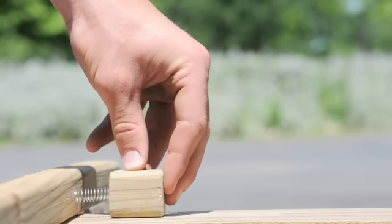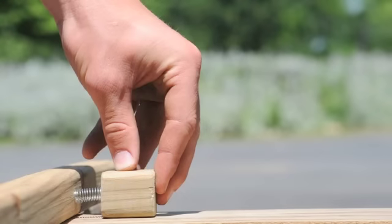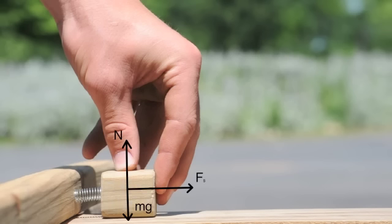This is a block attached to a compression spring. Again, we're going to analyze the forces acting on the block at this point in its motion. The normal and gravitational forces are the same as in the previous example. The force of the spring, F sub S, is now pointing to the right. The pushing force is pointing to the left, and the friction due to the block's motion is pointing to the right.